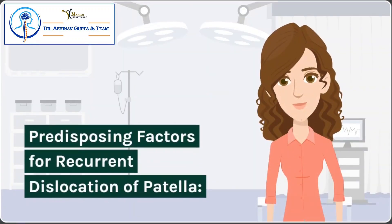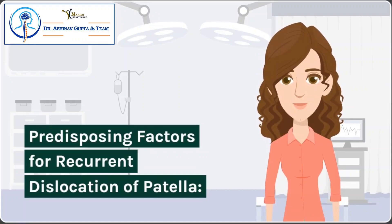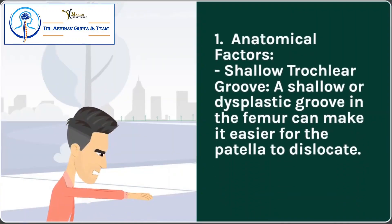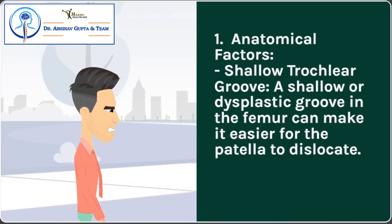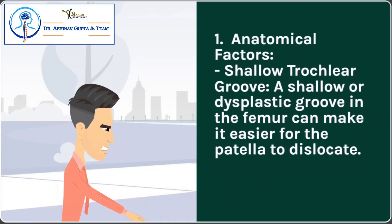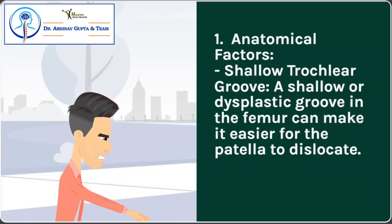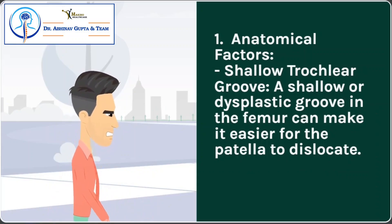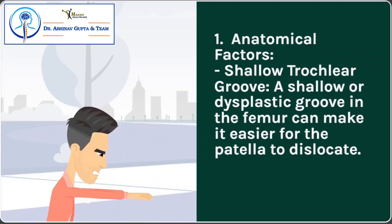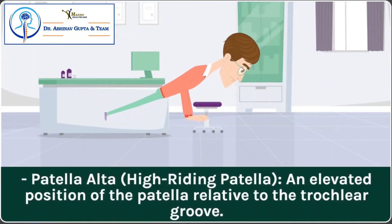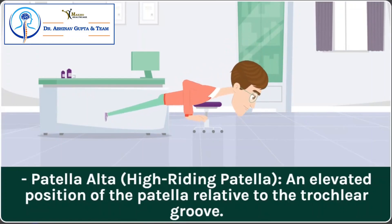Predisposing Factors for Recurrent Dislocation of Patella. 1. Anatomical Factors: Shallow Trochlear Groove – a shallow or dysplastic groove in the femur can make it easier for the patella to dislocate. Patella Alta (High Riding Patella) – an elevated position of the patella relative to the trochlear groove.